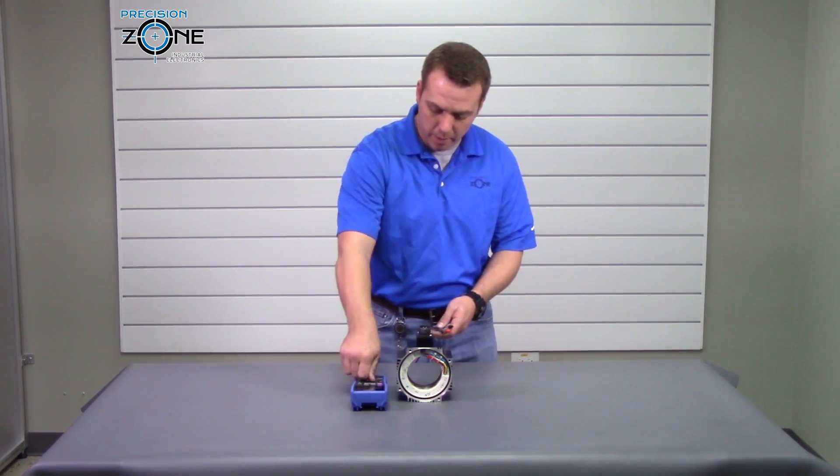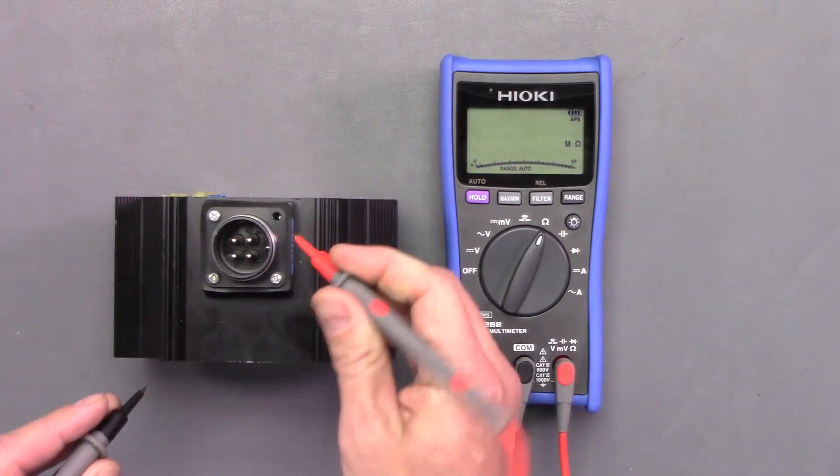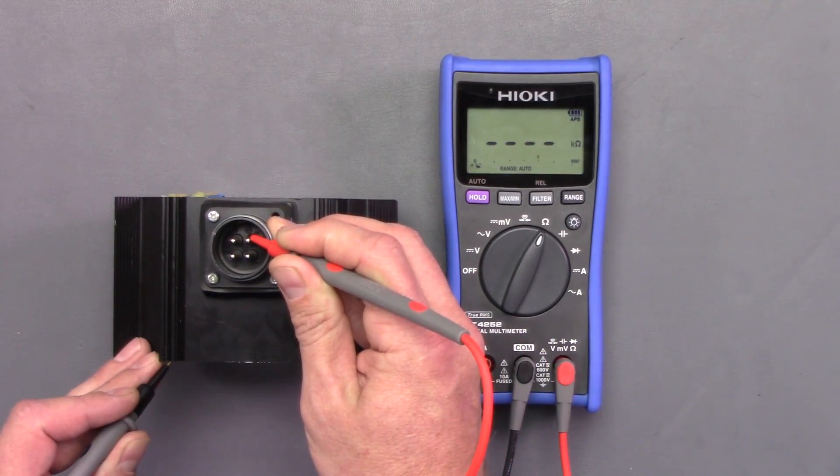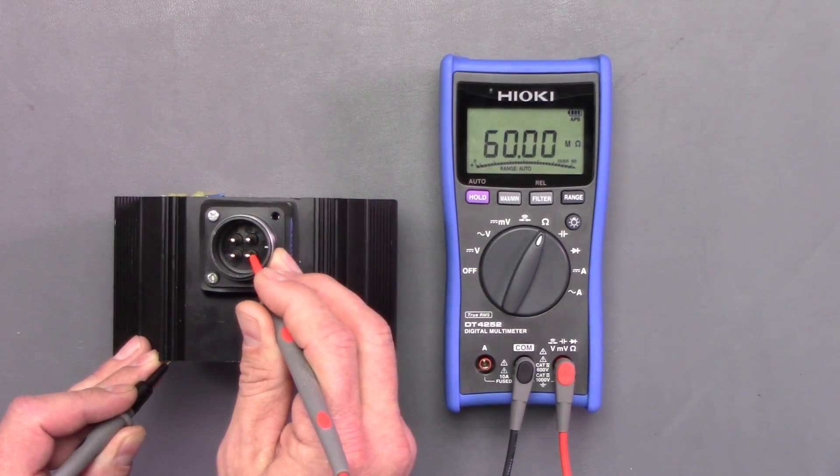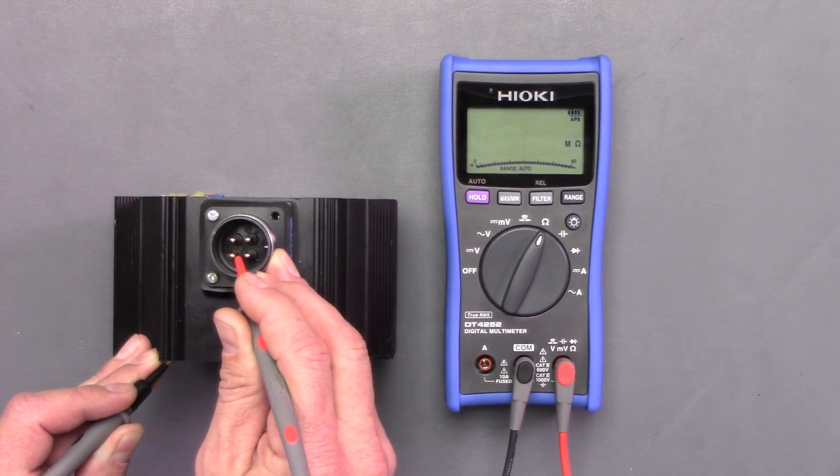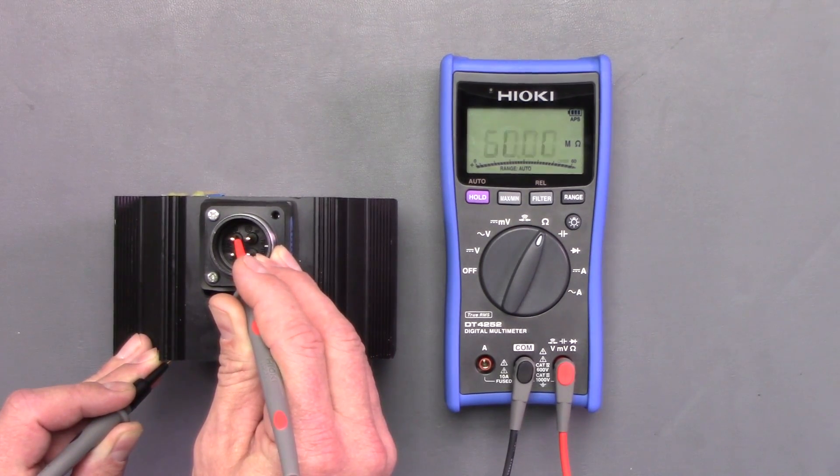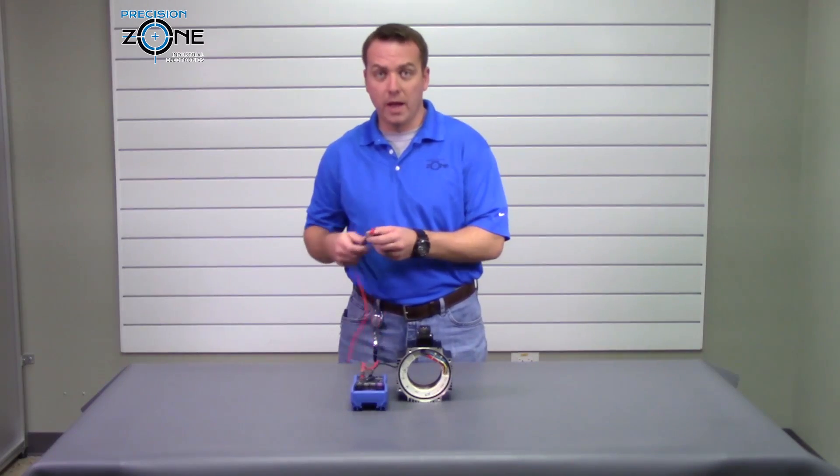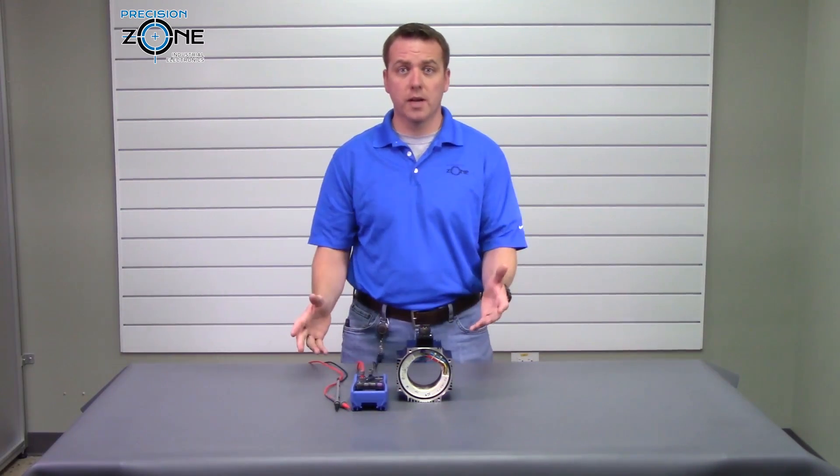So I'm going to go ahead turn my meter on. I'm going to check to make sure I have a good ground and I do and I'll go from U, V, and W and we don't have any continuity so that's great.